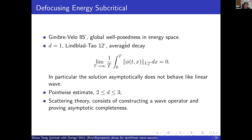What remains is the energy sub-critical case for the defocusing equation. In this case, global well-posedness is easier: since the energy is conserved and both kinetic and potential energy are uniformly bounded, the solution is global. But this method cannot tell you anything about long-time behavior. People believe the solution should behave like a linear one, except in dimension one because one-dimensional waves do not decay. In fact, Lindblad and Tao recently proved the solution satisfies a sort of average decay estimate: the L-infinity norm integrated from 0 to T, divided by T, goes to zero.